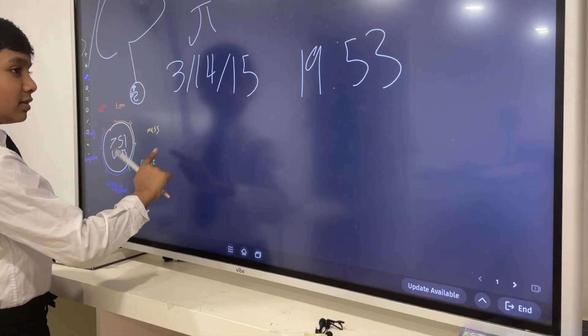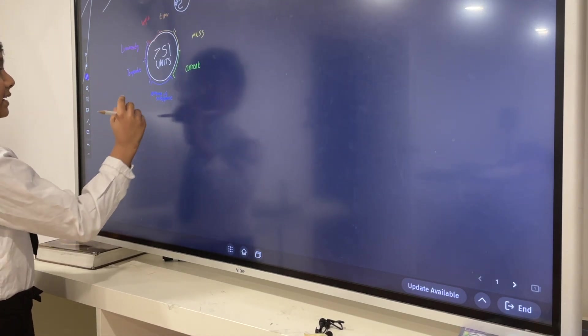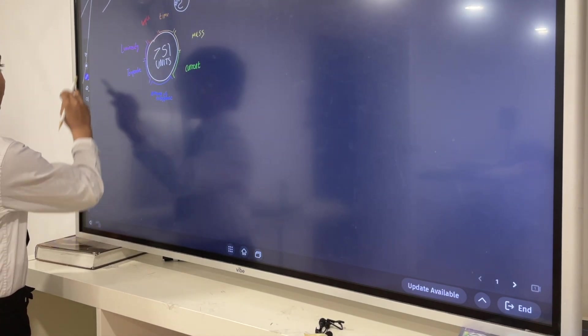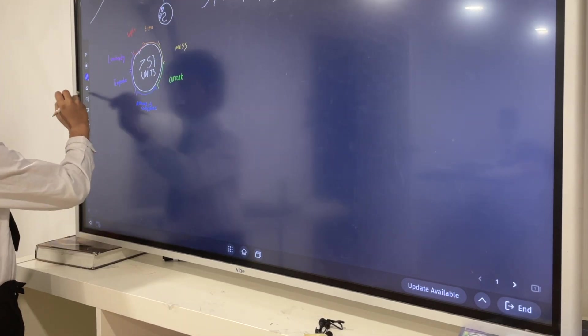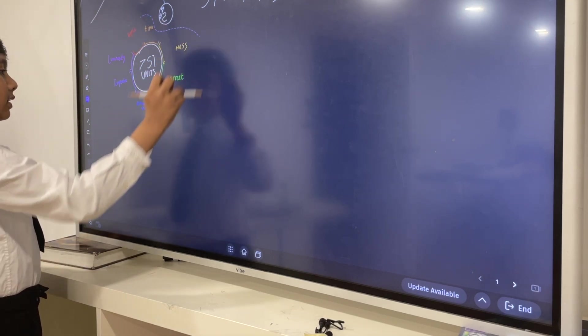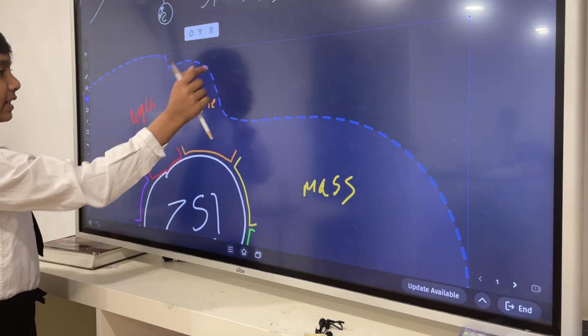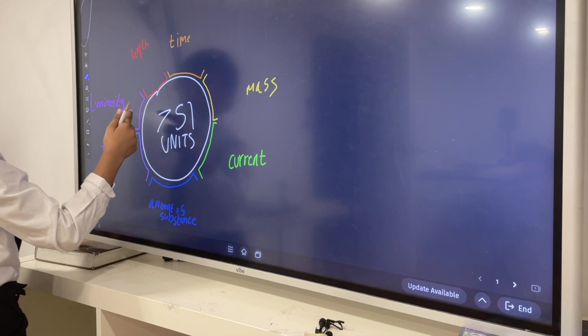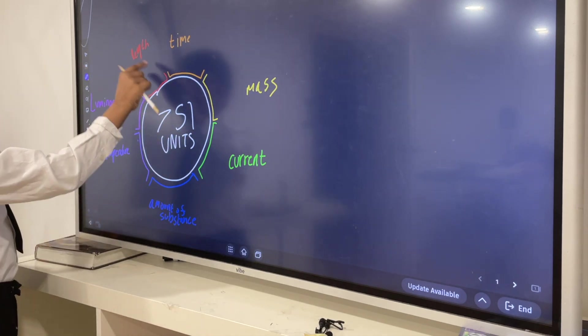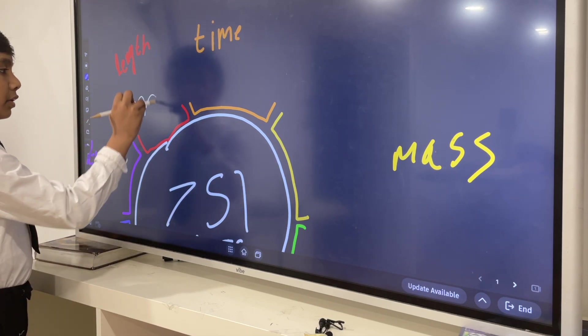Alright, so now let's see what SI units are. SI units are fundamental units and quantities used to measure seven bits. First of all, length. What unit do we use to measure length? We would use the meter.